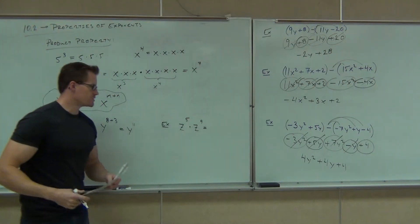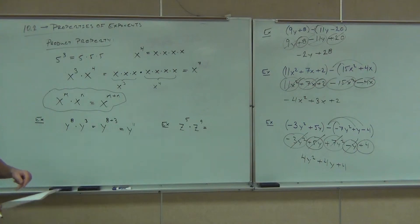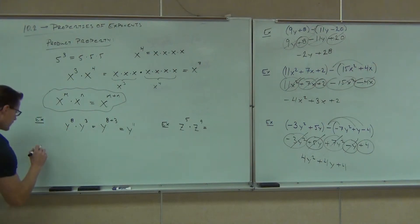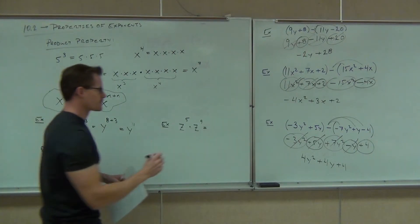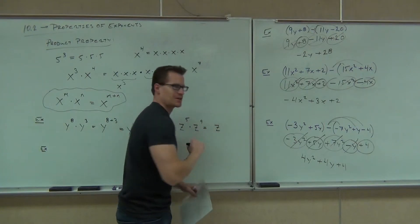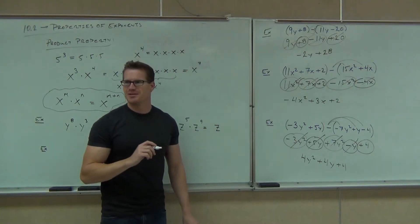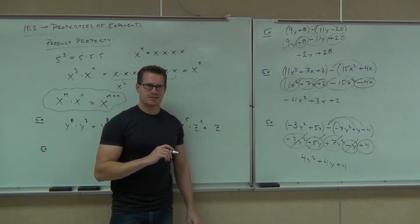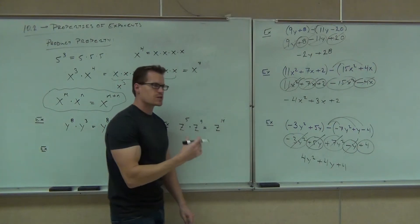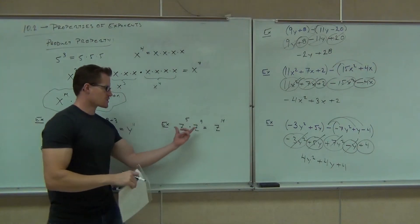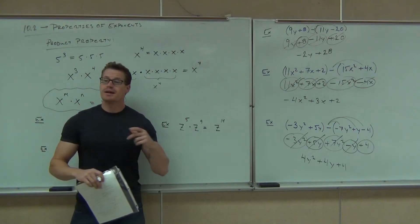Okay, do that one: z to the 5th times z to the 9th. It's kind of nice because they go quick. z to the 14th. We're adding those exponents when we have common bases being multiplied together.